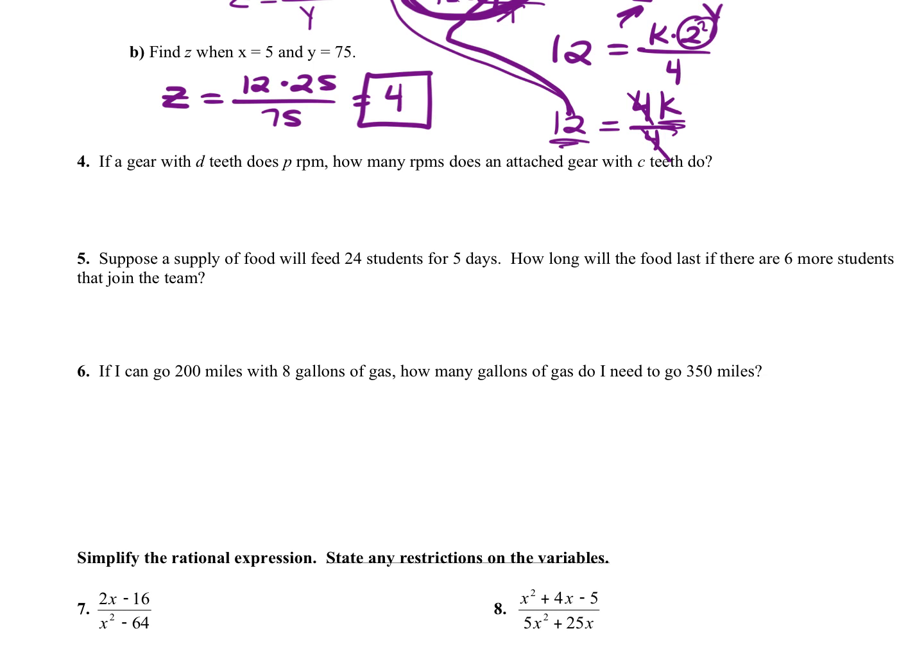This says, if a gear with D teeth does P RPMs, how many RPMs does an attached gear with C teeth do? So our other gear, we're going to call X. Who understands gears, the more teeth, but RPMs. They're both going up. So this is direct variation. If you don't understand gears, don't worry about it. But it is direct variation. They're both going up or they're both going down.